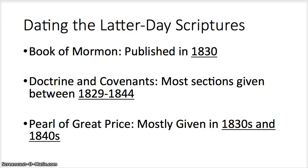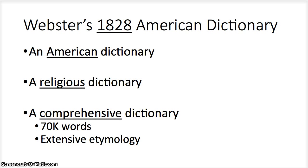This is relevant for our discussion today because we can think about when the Latter-day Scriptures were given. The Book of Mormon was published in 1830. The Doctrine and Covenants, most sections, come between 1829 and 1844. The Pearl of Great Price is mostly given in the 1830s and 1840s. Webster's Dictionary was published in 1828, making it directly relevant.